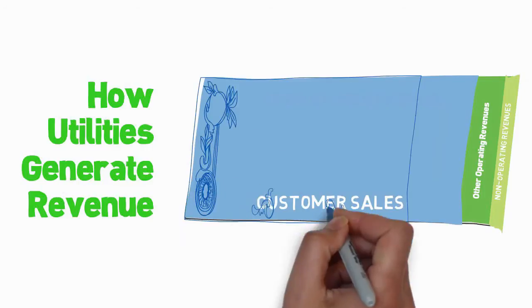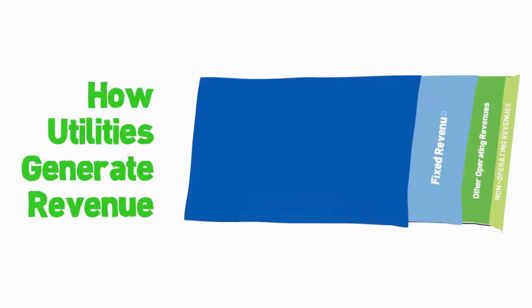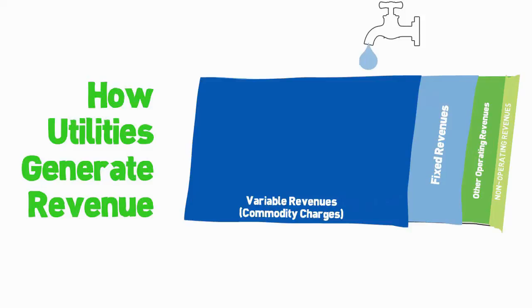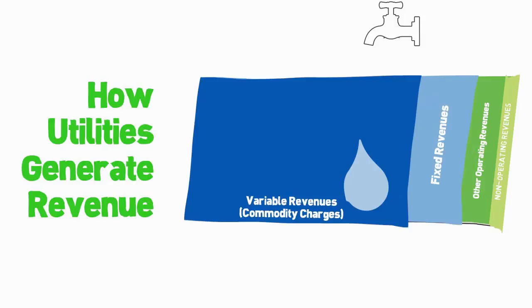Revenues from customer sales can further be divided into two general categories: fixed and variable revenues. Fixed revenues are not dependent on the volume of water used or wastewater discharged by the customer, and typically come from monthly base or service charges. Variable revenues, on the other hand, are linked to the volume of water used or wastewater discharged by customers, derived from the rates applied to these volumes. The balance between fixed and variable revenues is unique for each utility, but under the predominant business model, most utilities are collecting much more variable than fixed revenue.